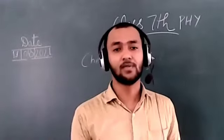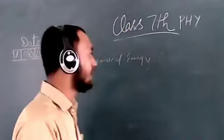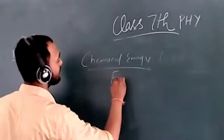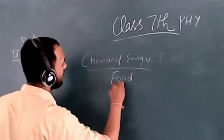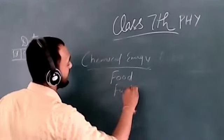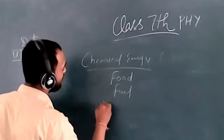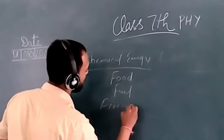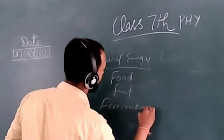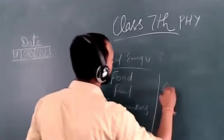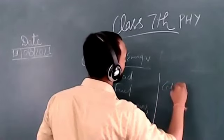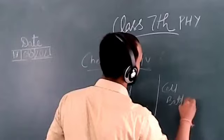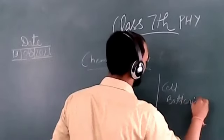The energy that is in stored form includes the energy stored in food, the energy stored in fuels, the energy stored in firecrackers, and the energy stored in cells and batteries. This stored energy is called chemical energy.